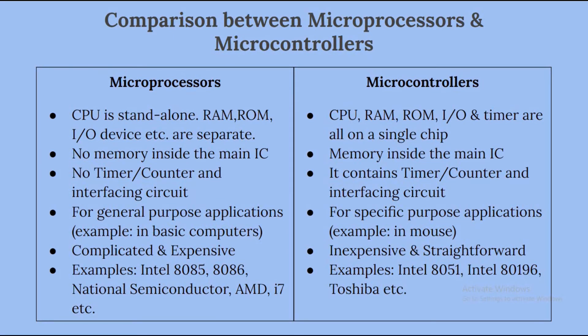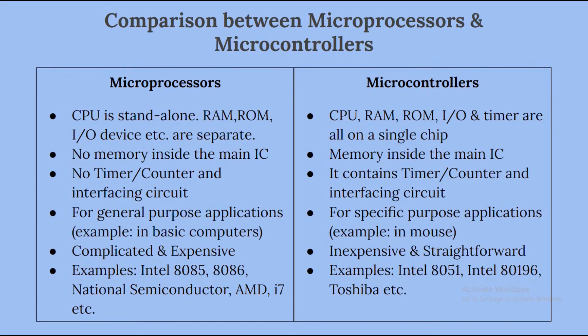Microprocessors are used for general purpose applications — for example, in a mouse, we use a particular specific application. Microprocessors are complicated and expensive with a large number of instructions to process. But microcontrollers are inexpensive and straightforward with fewer instructions to process.